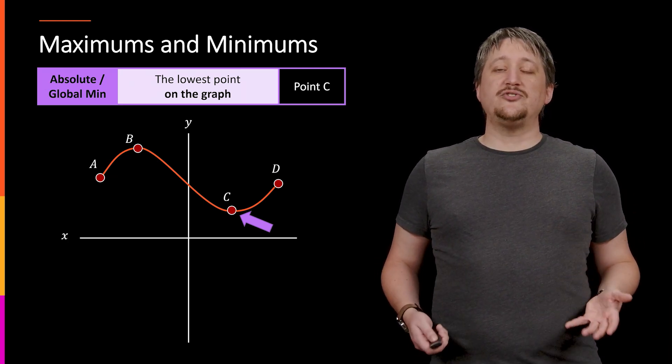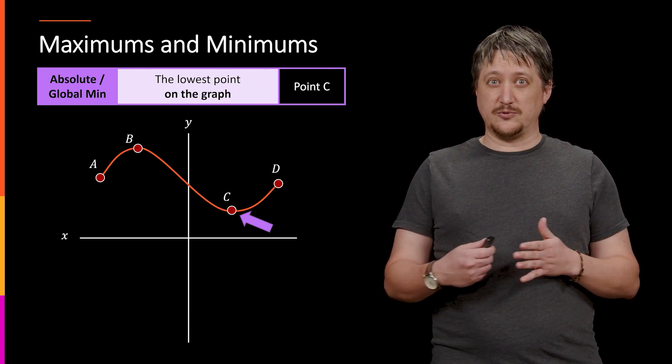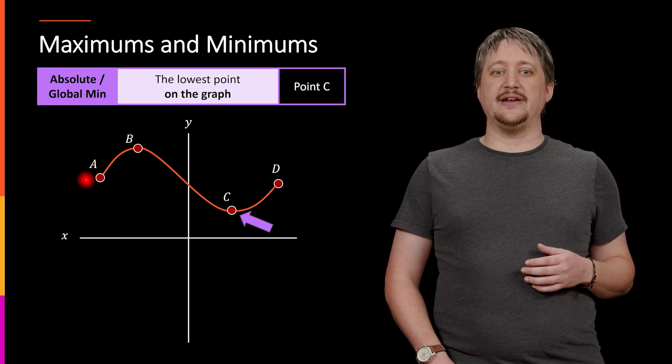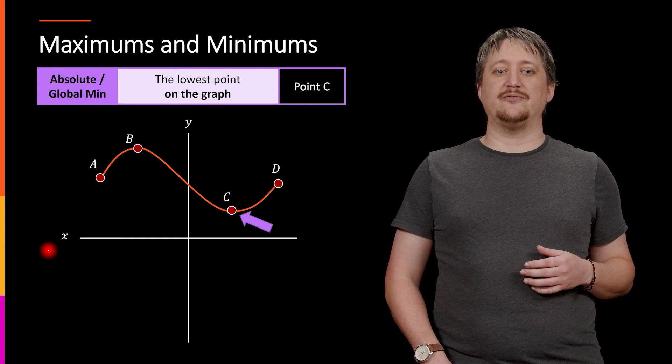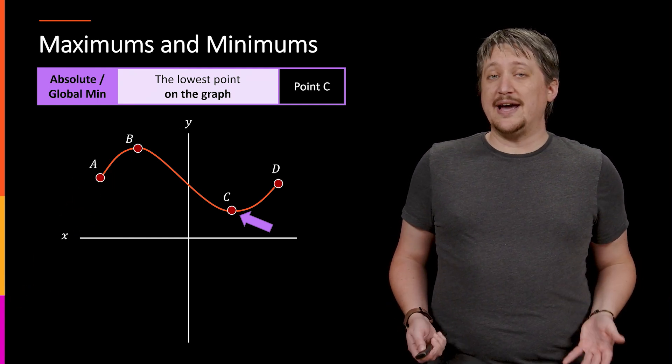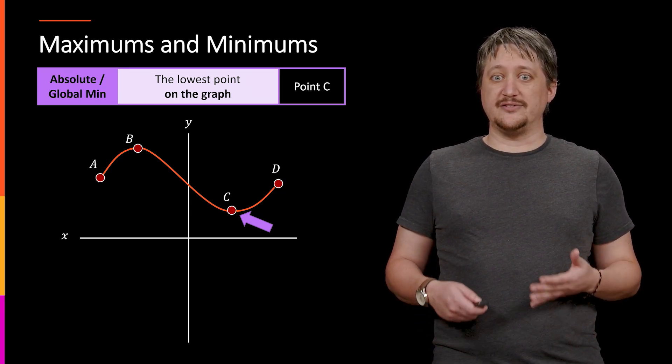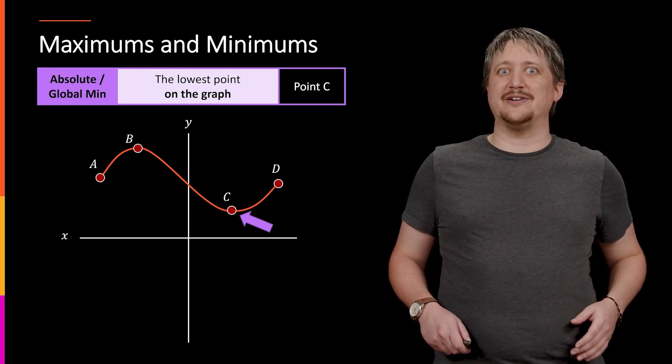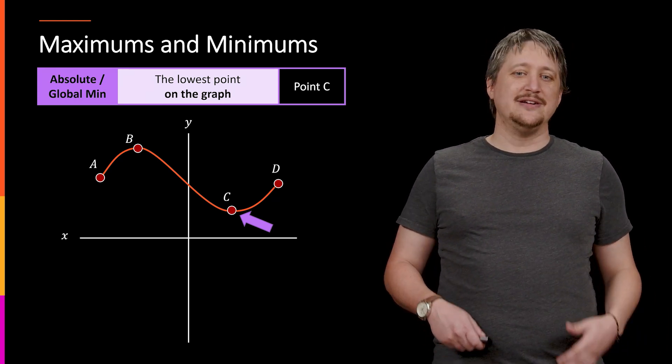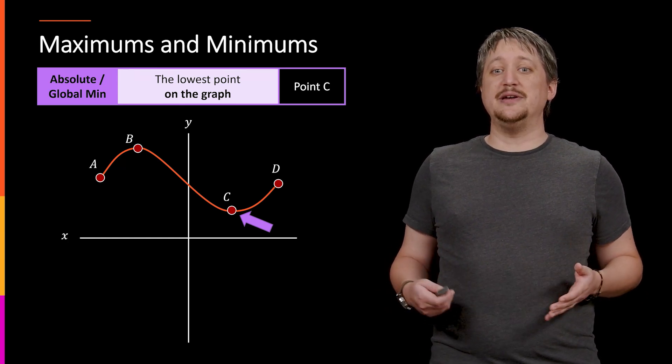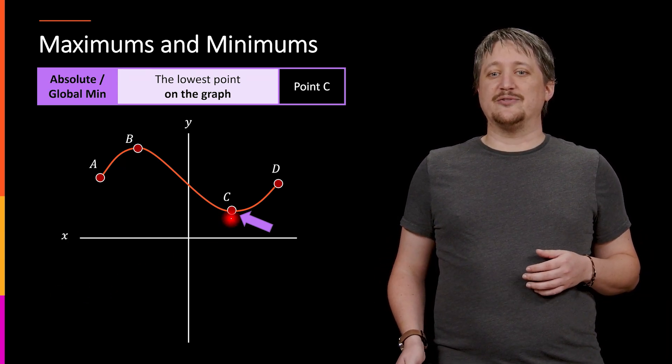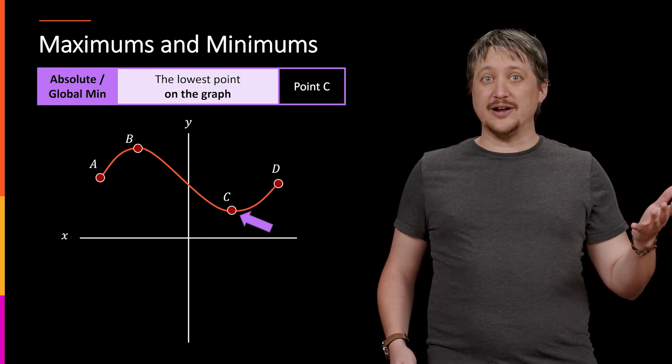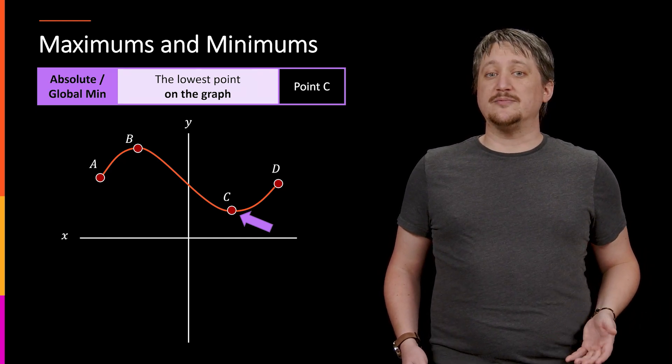So it's worth mentioning here that it has to be of the entire graph that you have, meaning that if we had this thing going down with an arrow, saying that it goes down forever, then we wouldn't have a global or absolute minimum because you have that thing going to negative infinity. It just goes down and down forever. Likewise, with the maximum, if this right-hand side went up and had an arrow on it, that would be saying it goes up forever. So we would have no global maximum.